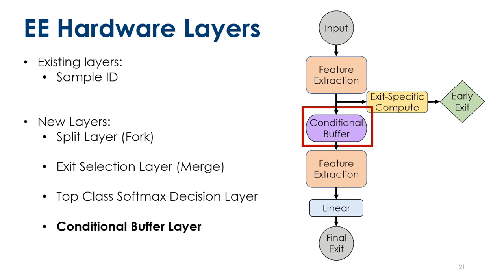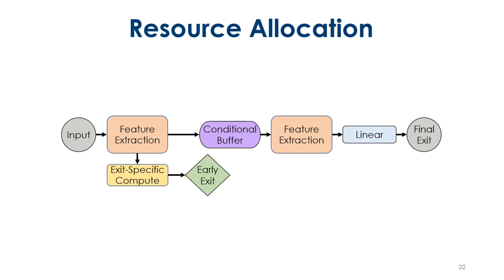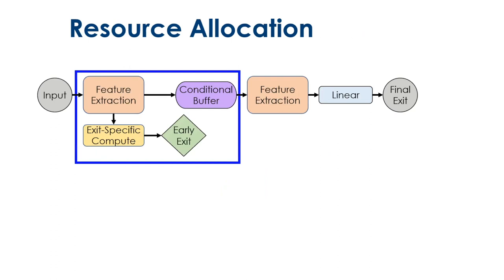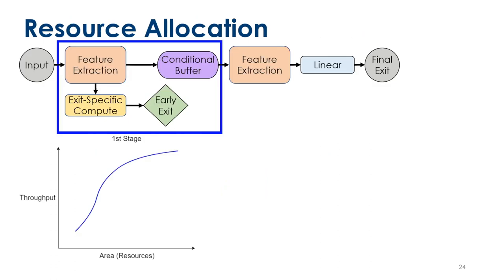Now we're going to look at resource allocation. For this explanation we're using a two-stage early exit network, but the same methodology can be applied more broadly to more exits. We use the conditional buffer placement as a dividing line between the two stages of the network here. We determine the potential accelerator design points for this first stage by generating a Pareto front using a CNN to FPGA mapping tool. In our case we have our extended version of the open-source fpgaConvNet. The points along this curve generated are the best achievable throughputs for a given area constraint.